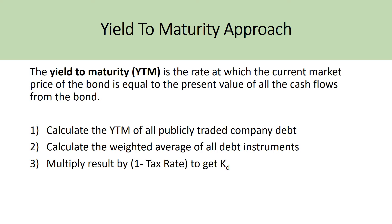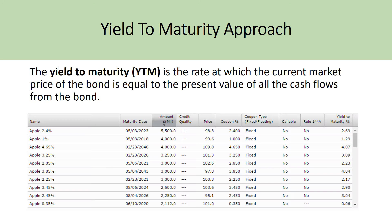The three steps to this approach are: first, calculate the yield to maturity of all publicly traded company debt — the bonds they have issued; then calculate the weighted average of all debt instruments; and then multiply that result by one minus the effective tax rate to get your after-tax cost of debt.